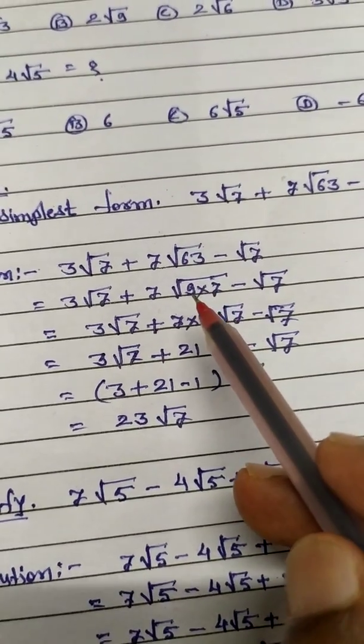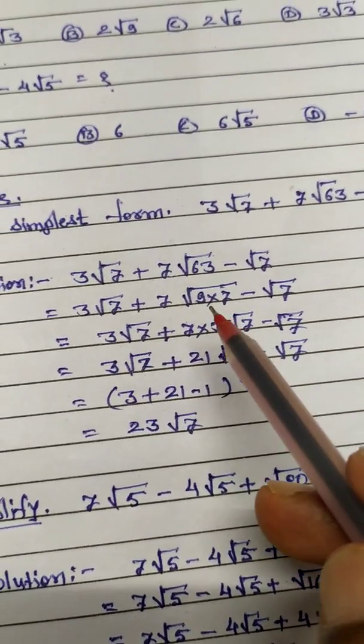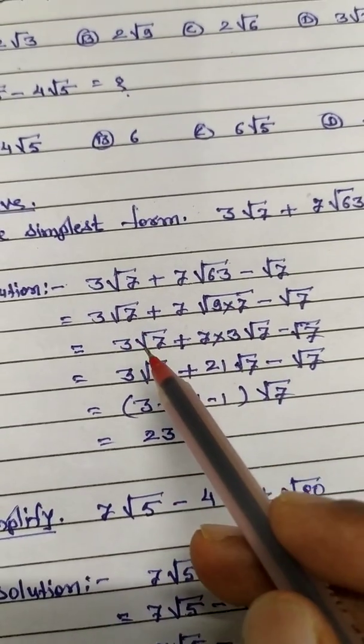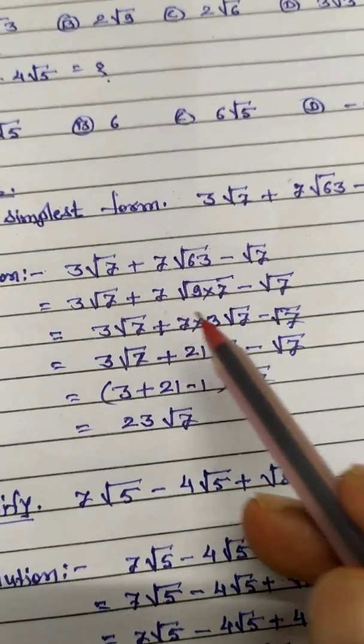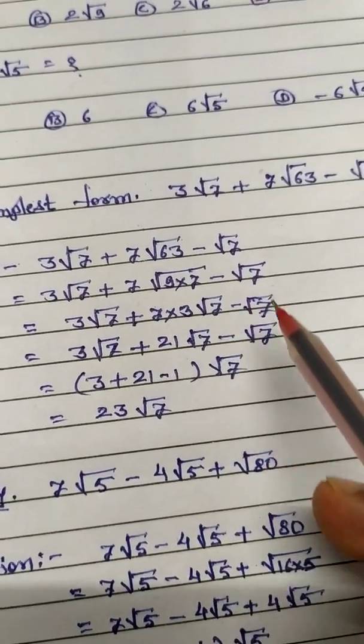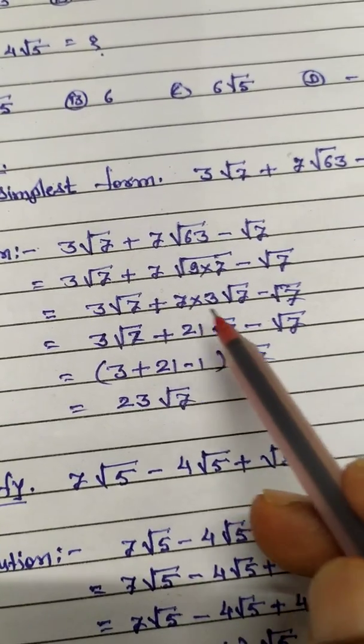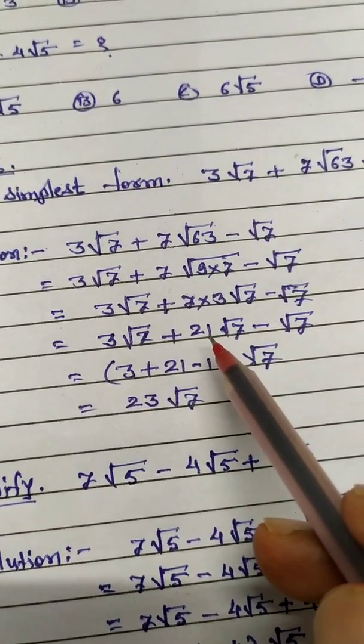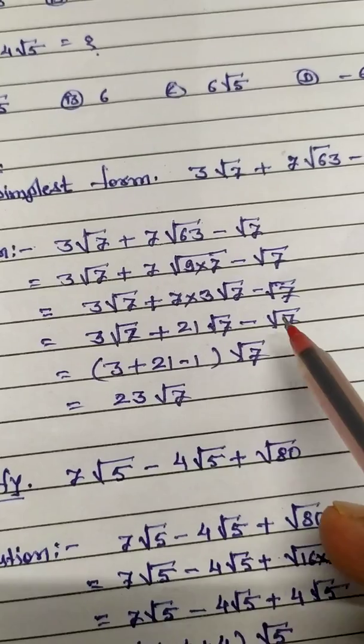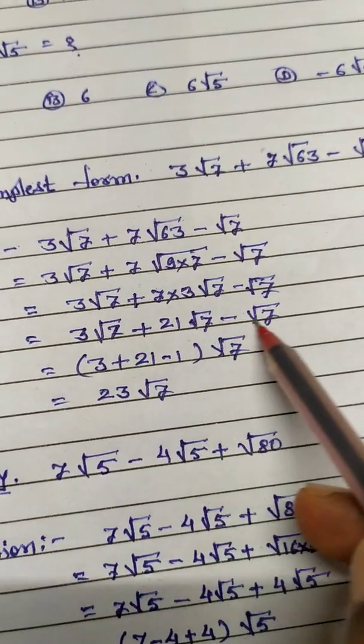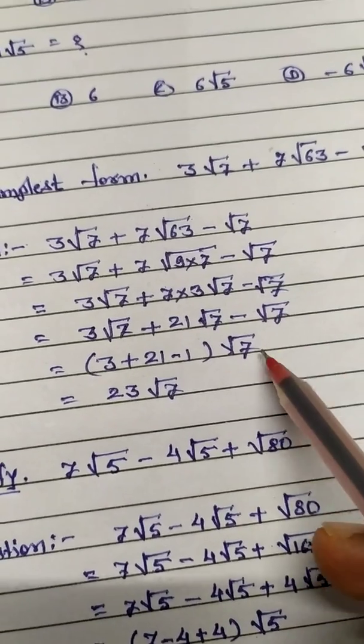Now this again, root 9 means I take outside of this surd. So this is right as it is, and 9 means 3, 7 as it is, minus root 7. Now again I write this, because we have to take the multiplication of this, 3 times 7 is 21, and this is again as it is.